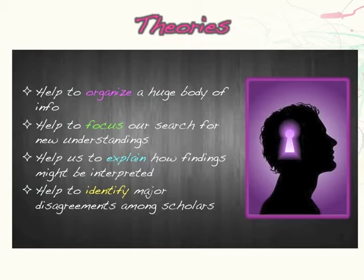Theories also help us to identify major disagreements among scholars. People might have different ideas on what causes or influences development. These differences are actually valued in the scientific community because they let us see holes or weaknesses in our theories, and then we can test the different ideas and get evidence that's valid and reliable. The ultimate goal of any theory is to provide a framework that furthers scientific vision and stimulates practical application.